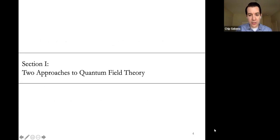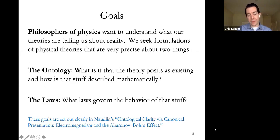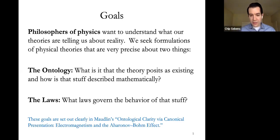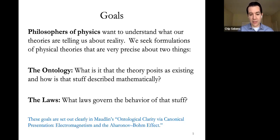What I'm trying to do with these different approaches to quantum field theory—and really a lot of my work and what philosophers of physics are interested in—is trying to understand what our best theories of physics tell us about reality. We seek precise formulations of physical theories, precise in two important ways: very clear about what exists, the ontology describing what the physics is about, and also very precise about the laws of nature governing that stuff.